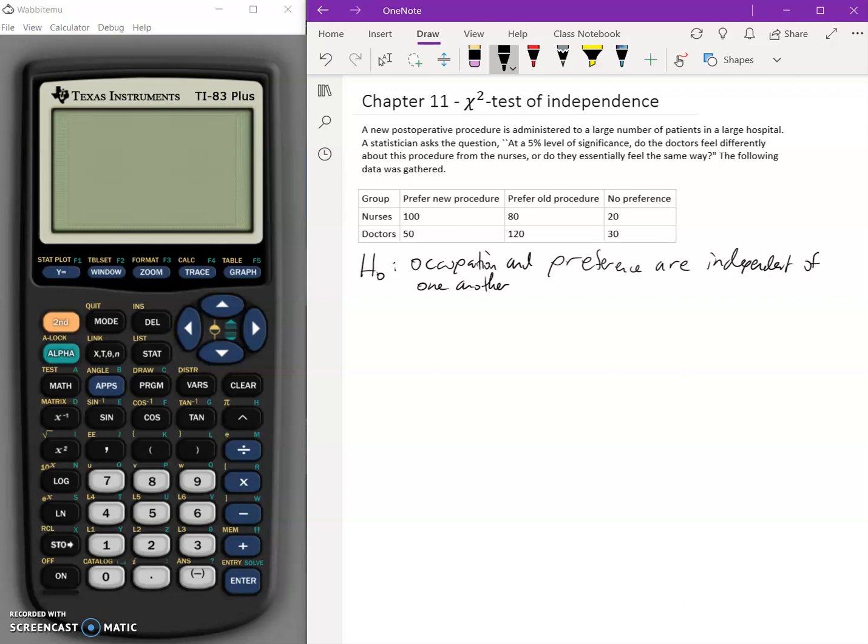So remember, we said independence. That means that there's no cause and effect, no relationship between these two. They're just basically distinct. So we said there's no relationship between these two. Occupation and preferences are independent.